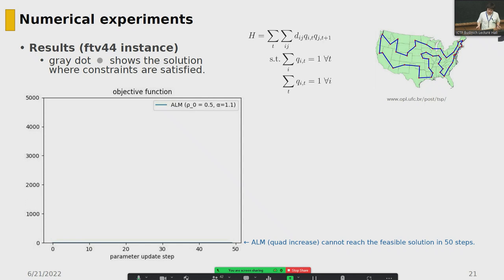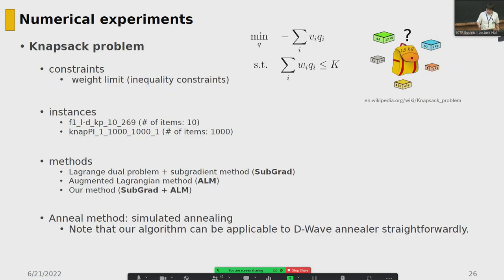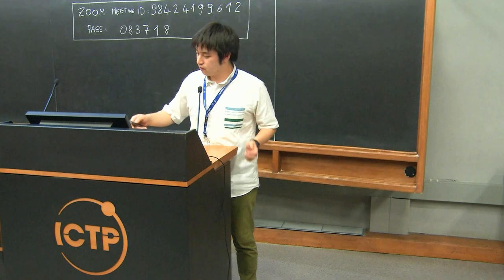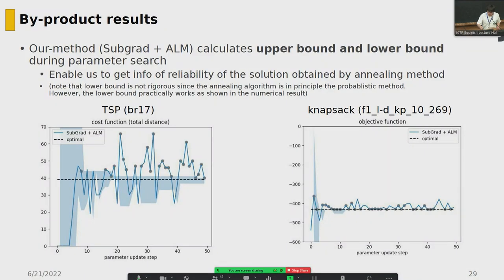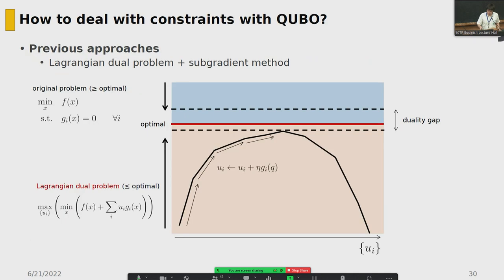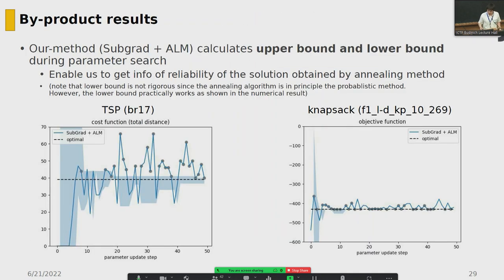We also experiment with larger instances and obtain the same result. We also perform the numerical experiment on the inequality constraint case, and it works very well. As a byproduct, remember that we calculate upper bounds and lower bounds throughout the iteration. The most interesting feature is that our method calculates the upper and lower bound during parameter search, enabling us to get information about the reliability of the solution obtained by the annealing method.